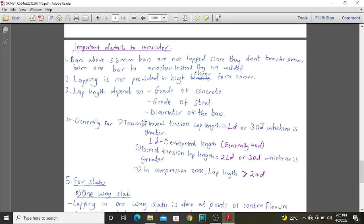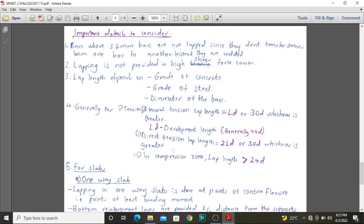Flexural tension lap length is normally you consider whichever is greater between development length or 30D, and D is the diameter of your bar. For direct tension lap length, we normally look at 2L over D or 30D, whichever is greater. As we mentioned earlier, L over LD is development length.